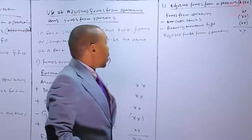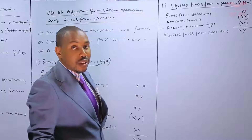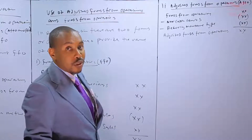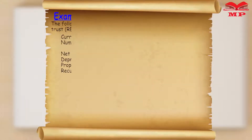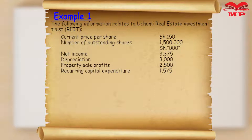Now we look at an example to demonstrate the application. The following information relates to Uchumi Real Estate Investment Trust: current market price per share is 50, number of outstanding shares is 1.5 million, net income is 3,375, depreciation is 3,000, property sale profits is 2,500, and recurring capital expenditures (CapEx) is 1,575. We are required to compute: one, FFO; two, AFFO; and three, AFFO yield.